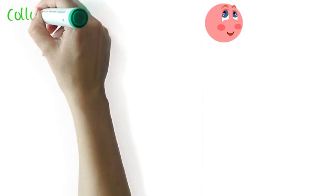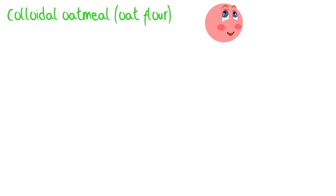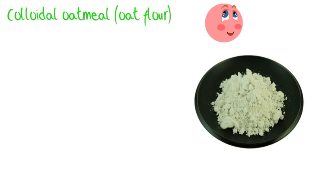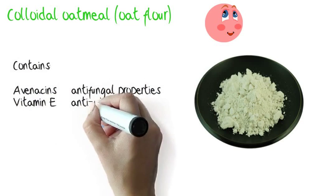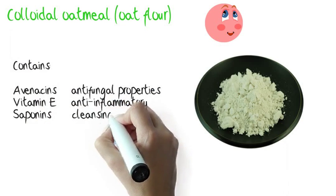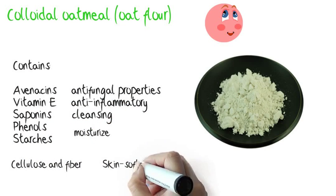For sensitive skin, a good suggestion could be colloidal oatmeal, which is just a dispersion of fine oat flour in water. This has anti-fungal and anti-inflammatory properties. It contains saponins, so it's good for cleansing. It moisturizes and helps calming the skin.